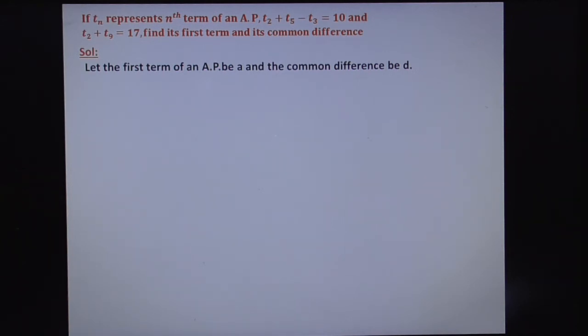What is nth term of AP? The general term, that is nth term of arithmetic progression, is given by TN equals A plus (N minus 1) times D. Now use this. Take the first equation, that is T2 plus T5 minus T3 equals 10. Apply TN equals A plus (N minus 1) times D here.